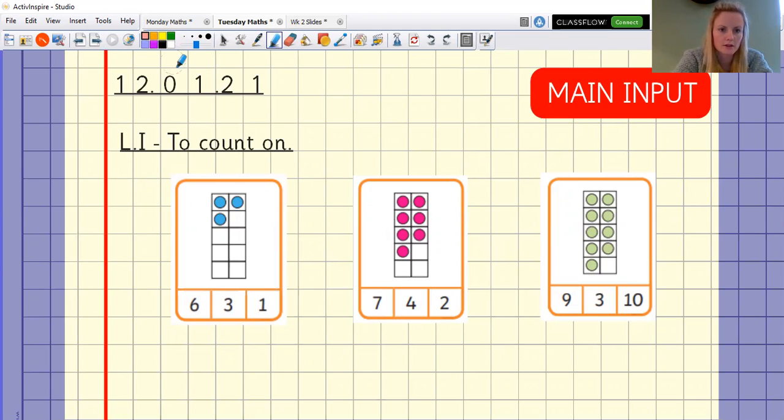Okie dokie. So you're right. This one has one, two, three. So you should have written the number three.